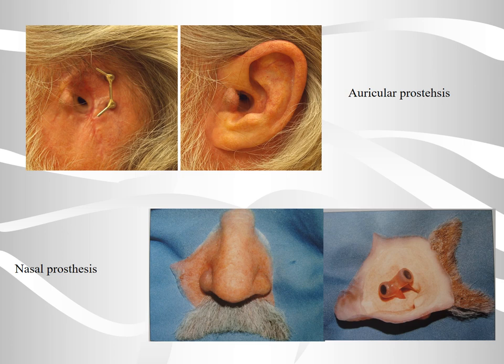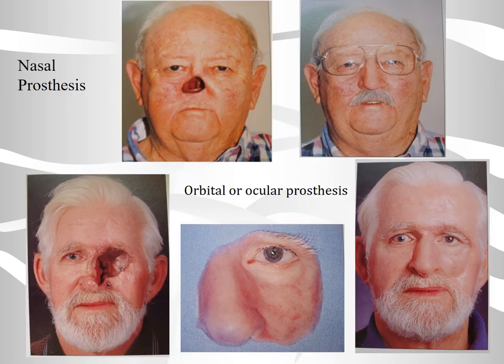In the photo, you can appreciate the auricular prosthesis on the top. In the bottom photo, you can see a nasal prosthesis. There is also an example of the nasal prosthesis in the top photo, and below you can see an orbital or ocular prosthesis.